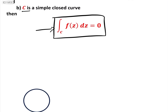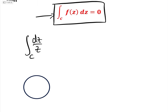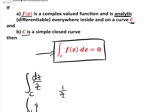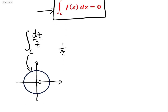Let's look first at the integral of dz over z around the curve C, where C is the unit circle centred at zero. Here is the point zero, the x-axis, and the y-axis. This is our curve C. Now we cannot use Cauchy's Theorem here, because the function one over z is not analytic everywhere inside — it is not defined for z equals zero.